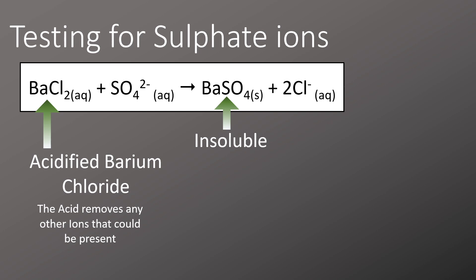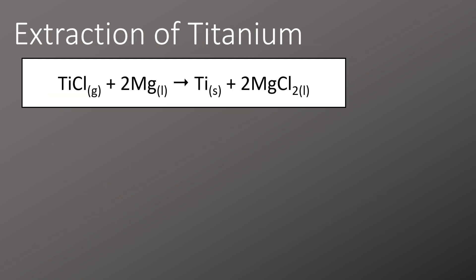It's useful to be able to remember some soluble sulfates, and this one we can remember is sulfuric acid forms sulfate ions and hydrogen ions. One of the examples given to us to learn is the extraction of titanium.